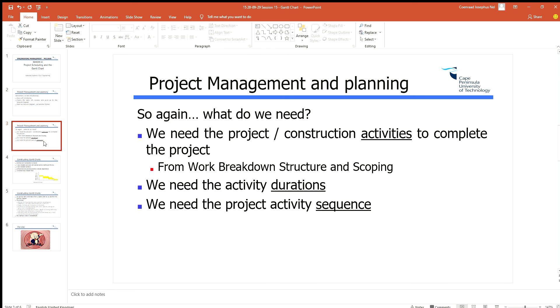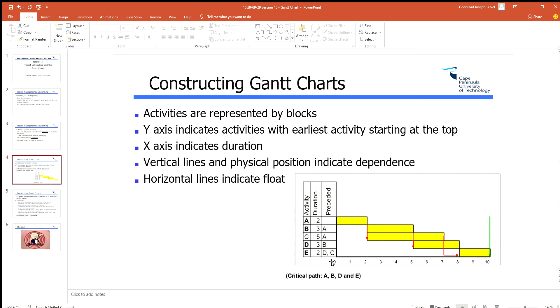What do we need again? We need the same set of information: we need activities, we need the duration, and we need the sequence. This is the way we are showing this, exactly the same as we used to have. We've got the activities, we've got the duration, and we've got the sequence.